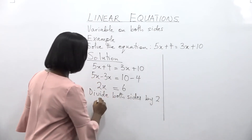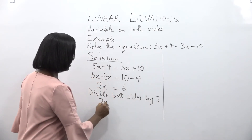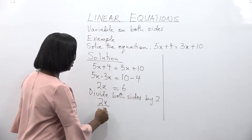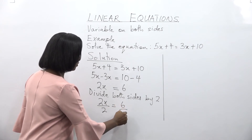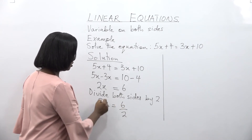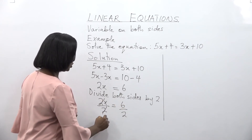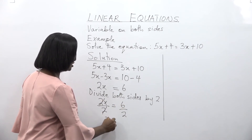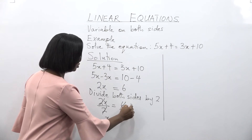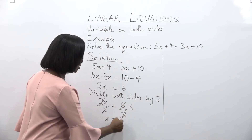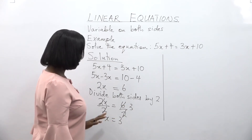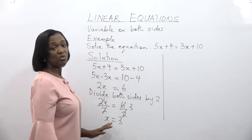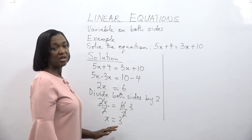So we have 2x is equal to 6. To find the value of x, we divide both sides by 2. So 2x over 2 is equal to 6 over 2. 2x divided by 2 gives us x, and 6 divided by 2 gives us 3. So the value of x is equal to 3.